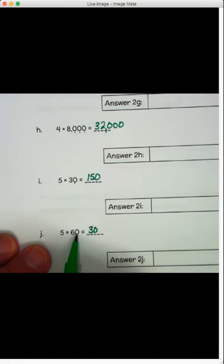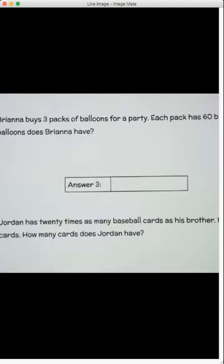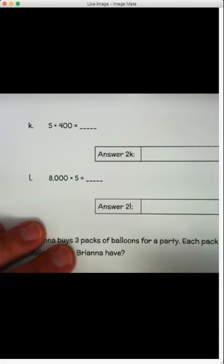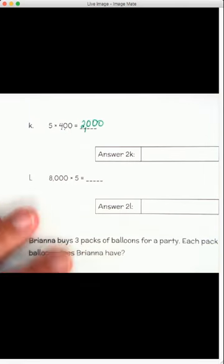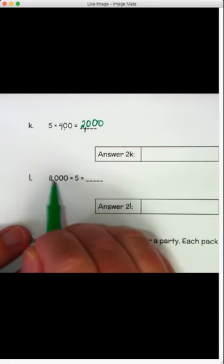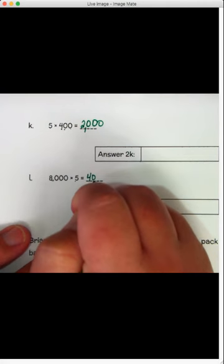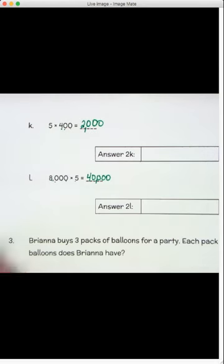Part J. 5 times 60. 5 times 6 is 30. Don't let that confuse you. You've still got to add the 0. 1, 0. The answer is 300. We can get through these problems pretty quickly. If you know your multiplication facts, it doesn't take long at all. And let's do a couple more. 5 times 400. 5 times 4 is 20. And I have to add these 1, 2 0s. 1, 2. The answer is 2,000. 8,000 times 5. 8 times 5 is 40. And I'm going to add 1, 2, 3 0s. The answer is 40,000.